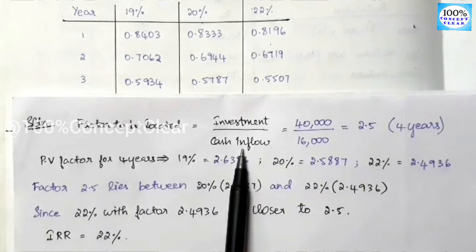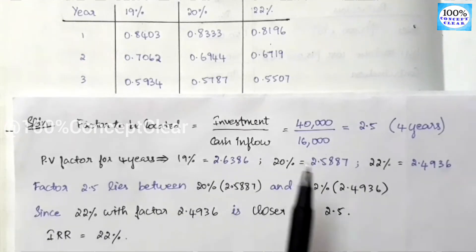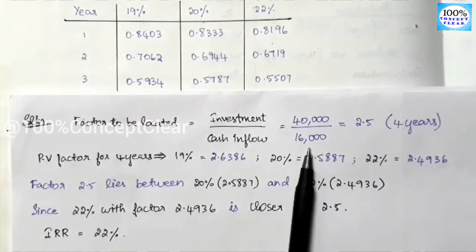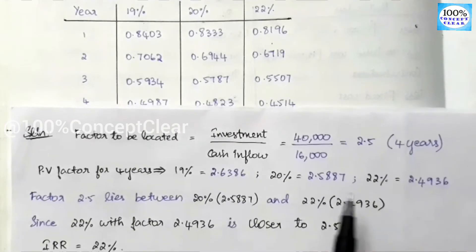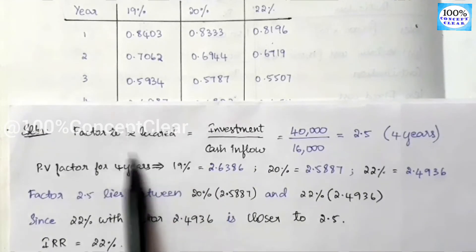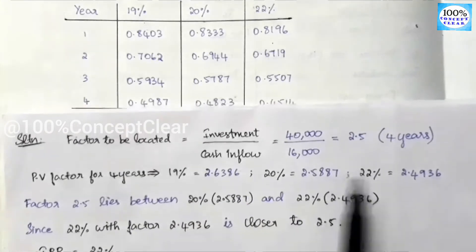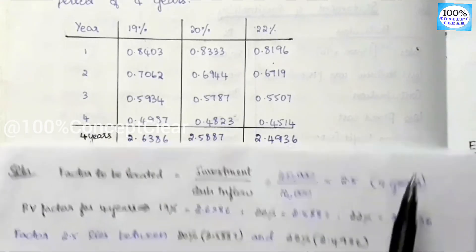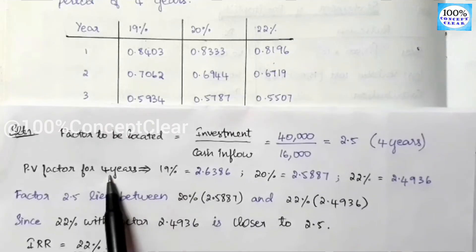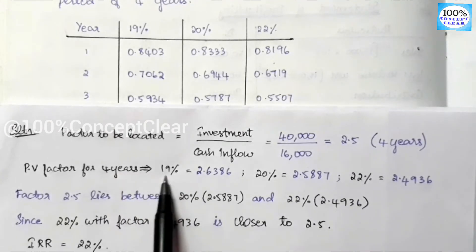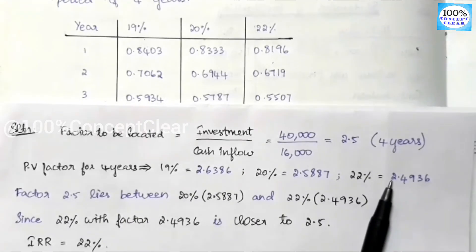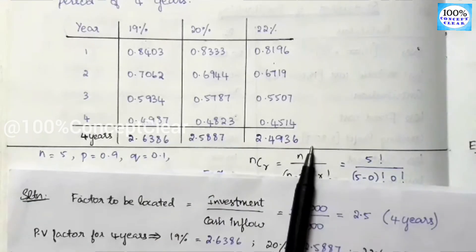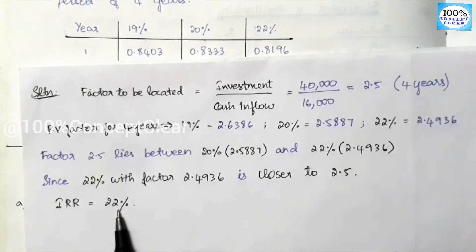The second type is when cash inflows are not uniform. In that case we find the exact value differently. If you want to see that type of sum, you can find it in the description. You can also ask in the comment section. So the Internal Rate of Return is equal to 22%.